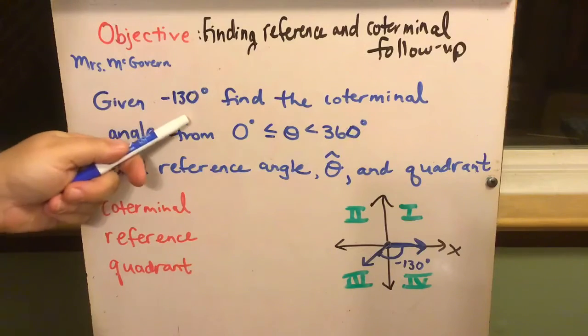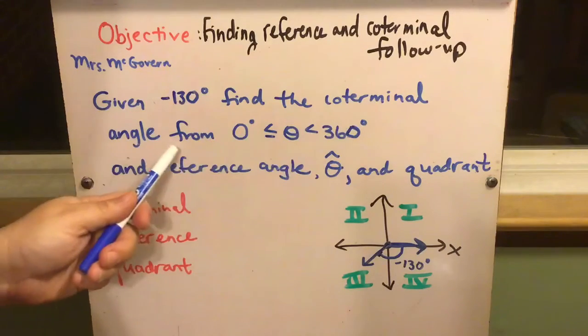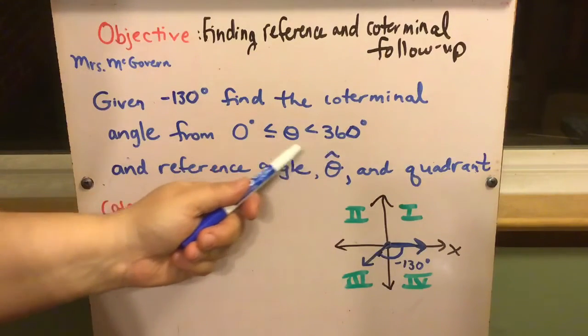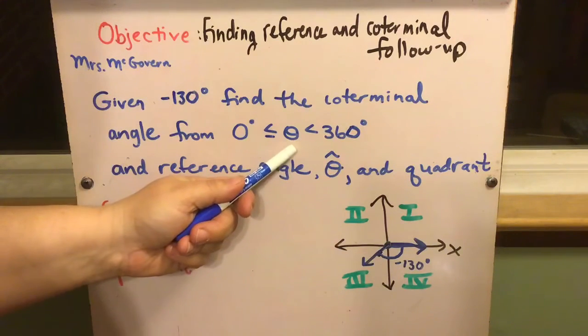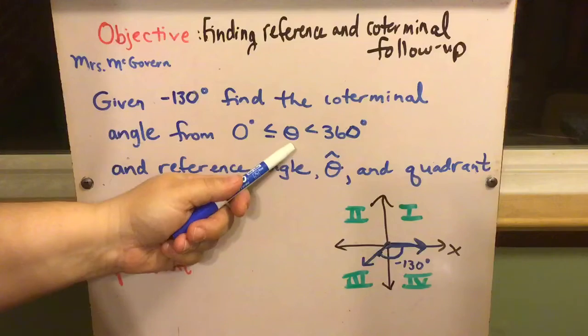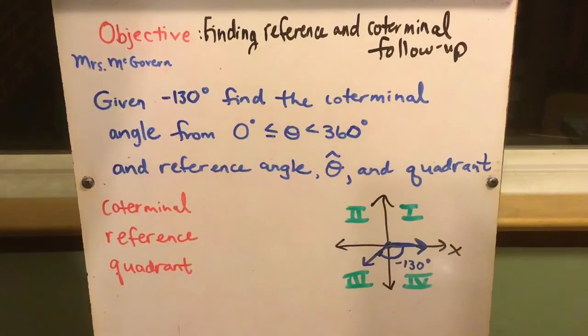So if we read the question: given negative 130 degrees, find the coterminal angle from 0 to 360. Now this is not an x, it's a theta, but it means a variable just like x does. It's just fancy for angle measures.